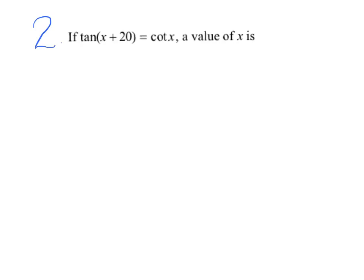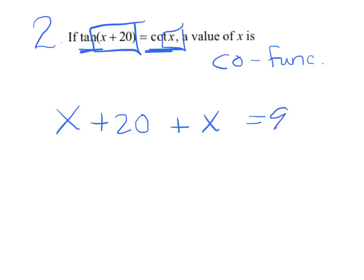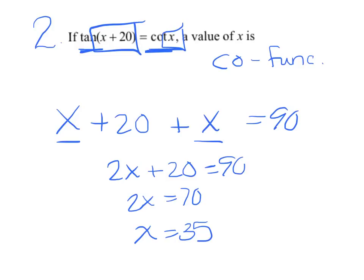If tangent of x plus 20 equals cotangent of x, the value of x is. You have tangent, and then you have a cotangent. Therefore, they are co-functions again. We're just going to say that they are complementary. So, this guy's angle, x plus 20, plus this guy's angle, has to total 90. Quick solve for x. I've got two like terms there. 2x plus 20 equals 90. Subtract my 20. 2x equals 70. And hopefully, you get x equals 35. Hopefully, not too shabby.